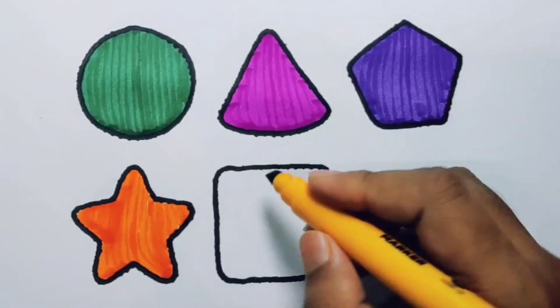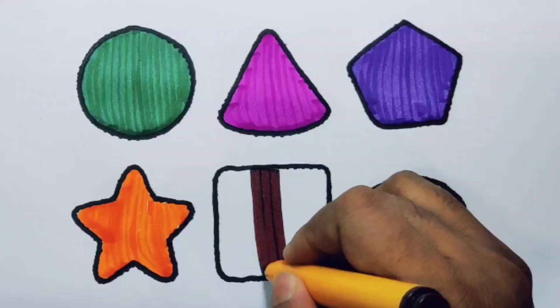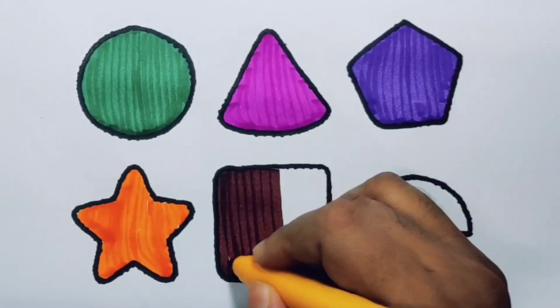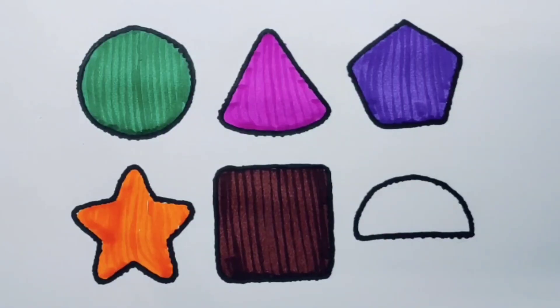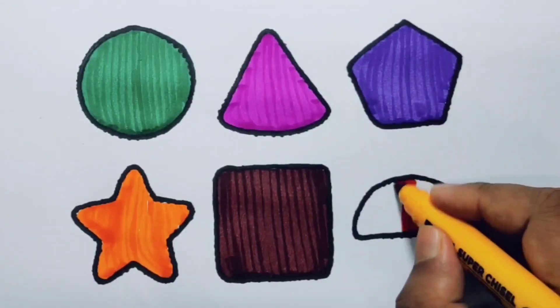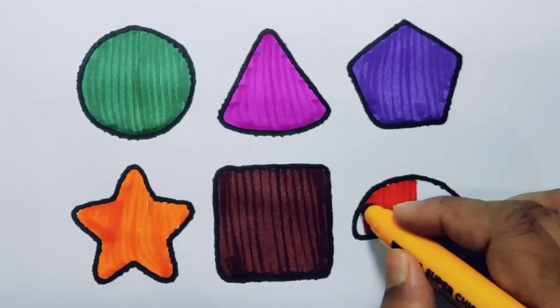Chocolate color square. Red color semicircle.